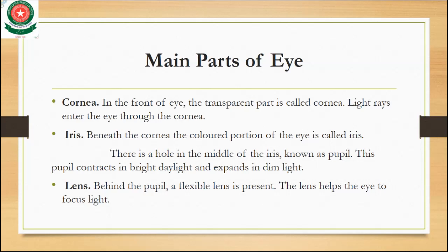Next is the lens. There is a flexible lens present behind the pupil. It is called the lens and it helps the eye focus on the light. The work of the lens is that you can focus on the light, and it is located behind the pupil.